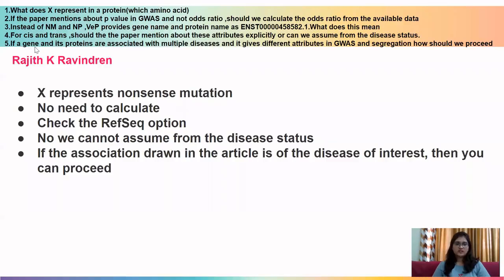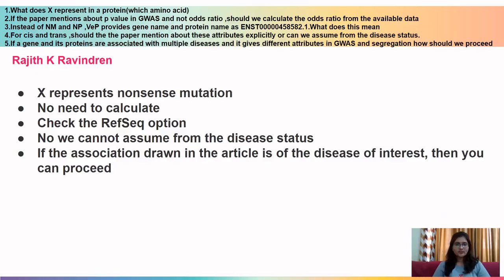The next question is by Rajit. First: what does X represent in a protein change? X represents a nonsense mutation. If still confused, refer to the first few sessions of the workshop where the basics of genomics are discussed. Second question: if a paper mentions a p-value and odds ratio in Jeevas studies, should we calculate odds ratio from available data? If the odds ratio is already mentioned, there is no need to calculate. If not mentioned but the number of cases and controls is available, you can calculate the odds ratio.